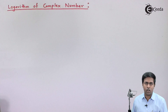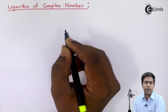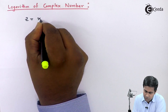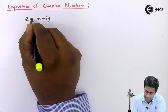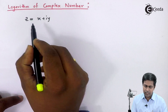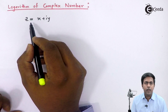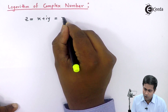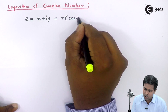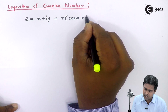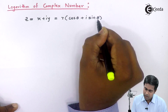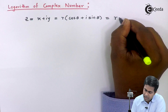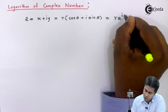To understand this concept, I am assuming one complex number z equal to x plus iy. Here I am representing the number in Cartesian form. The polar form of this number is r into cos theta plus i sine theta, as we all know, and the exponential form is r into e raised to i theta.